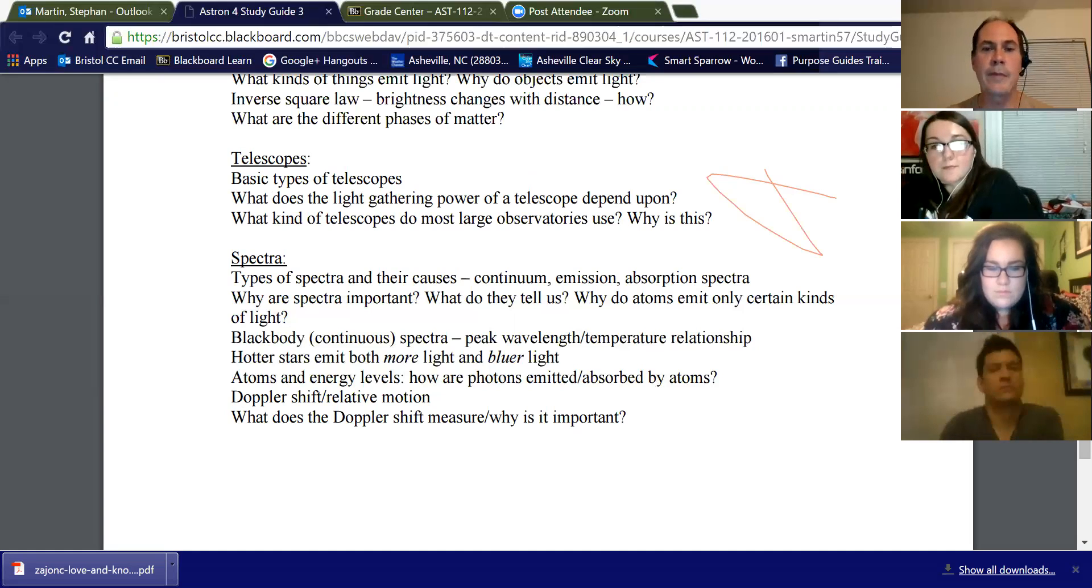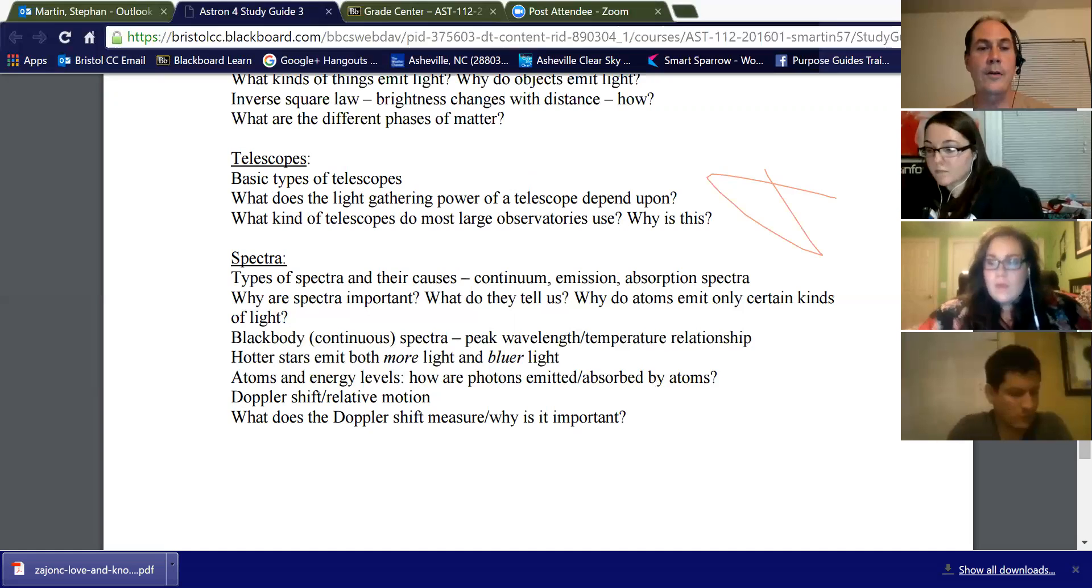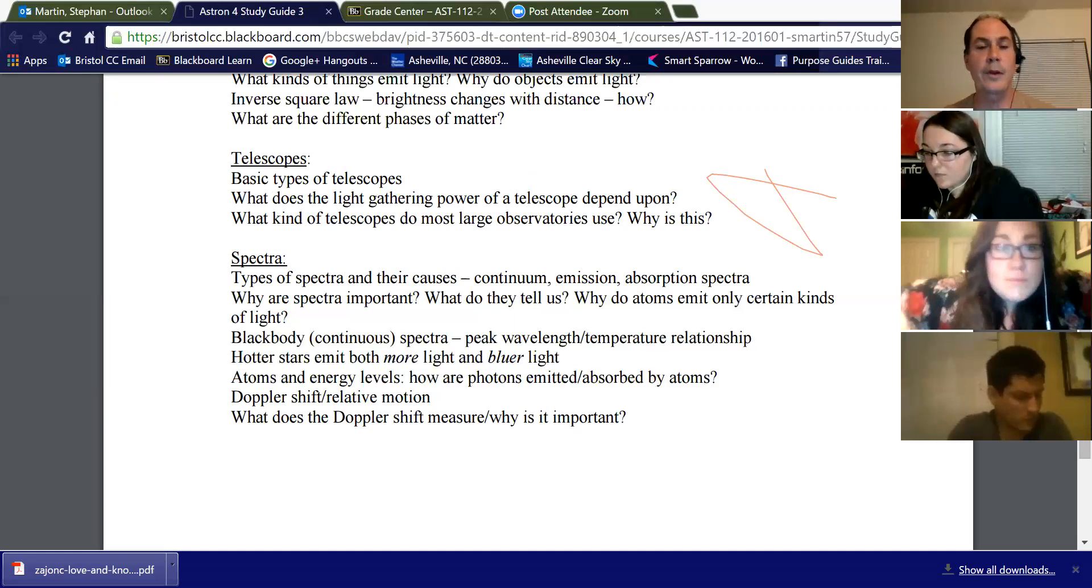What else? Black body, continuous spectrum, basically the peak wavelength of the rainbow, or the continuum, is the temperature. So you can use spectrum to determine temperature. Hot stars emit more light and bluer light. So the hotter the star, the brighter and bluer it is.